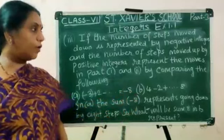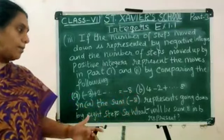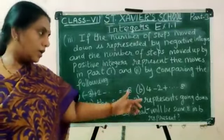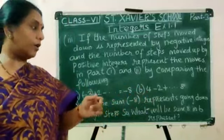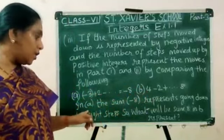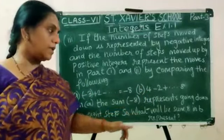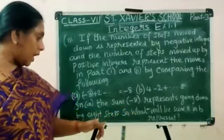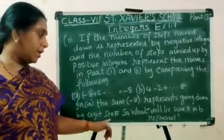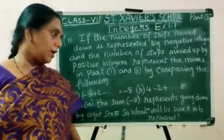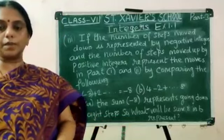The 2nd one: 4 steps down and 2 steps up. When you add all these jumps, we get 8. So in A, the sum minus 8 represents going down by 8 steps. So what will the sum 8 in B represent?